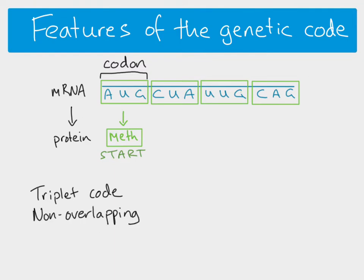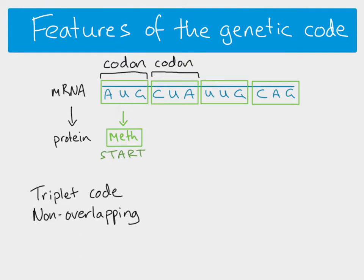The genetic code is non-overlapping. The first codon is AUG, the second codon CUA follows on from that, and the third codon UUG follows on from that. We do not have a situation where the first codon AUG and the second codon share bases — for example UGC overlapping, or GCU overlapping after that. That does not happen. You always have one codon and then the next. Non-overlapping is very important in terms of how we read the code.